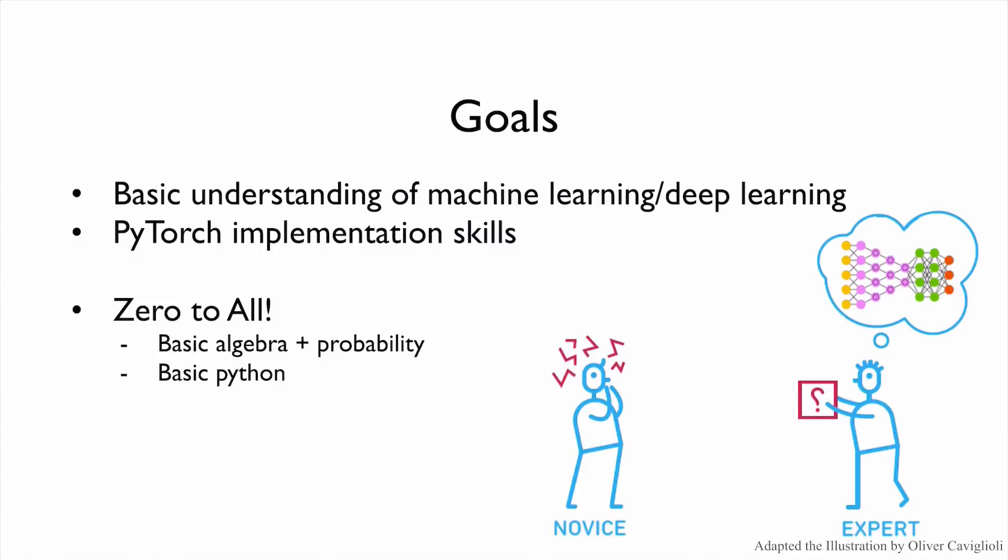What are the goals of this course? We want to provide basic understandings of machine learning and deep learning. But not only the theory part, we are going to implement every concept using PyTorch so that we can have concrete understanding of these concepts. In order to enjoy this course, we just need basic math skills including algebra and probability. Also, if you have some experience of writing software using Python, that will be enough.